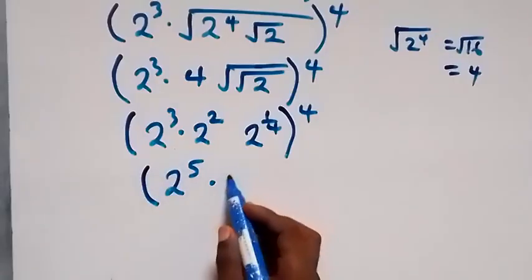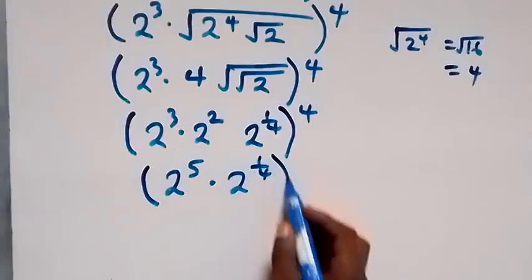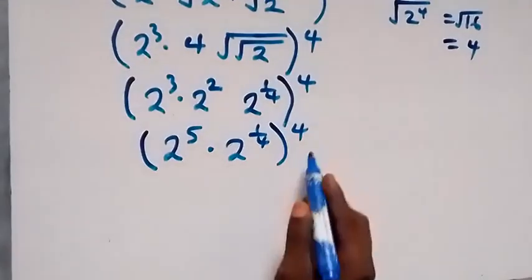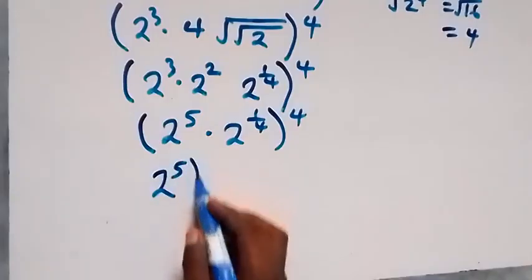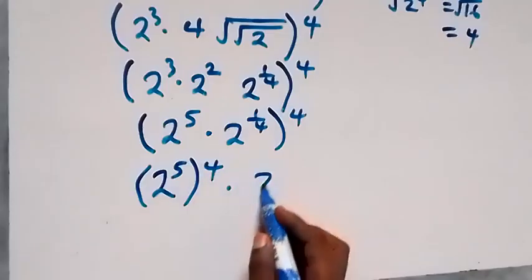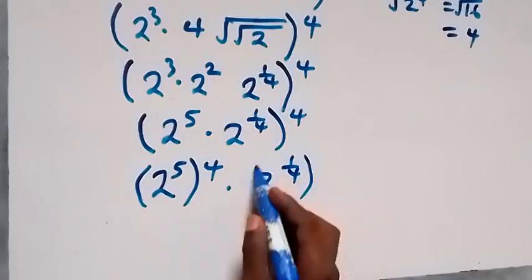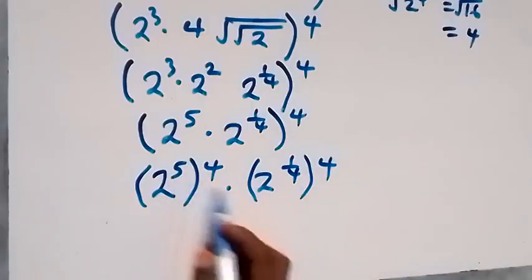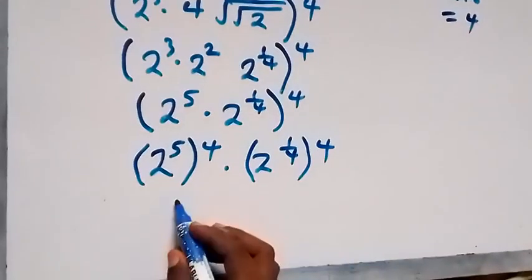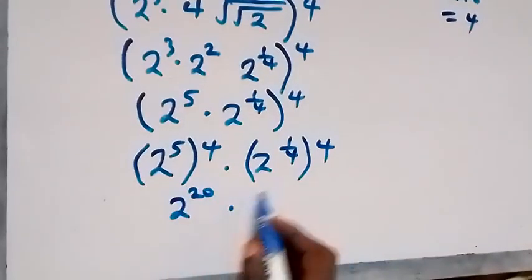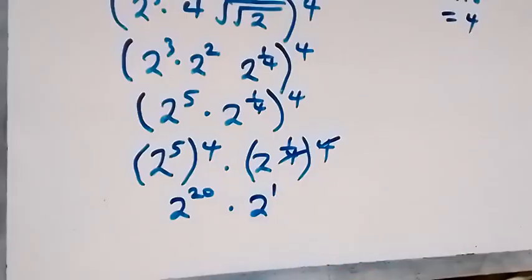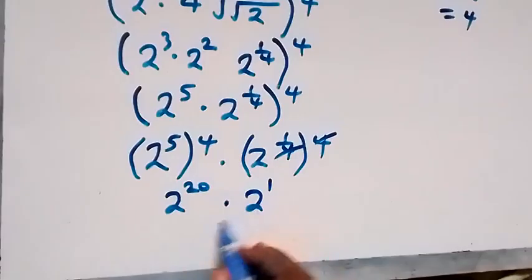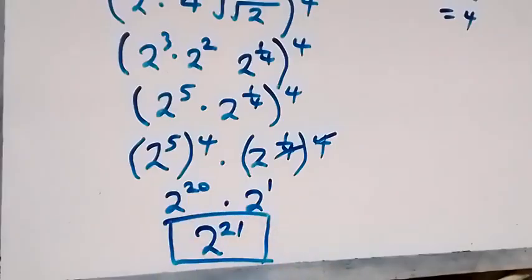Then from here, bringing this together using the law of indices, this is two raised to power five, times two raised to power one over four, then all raised to power four. This power will affect these numbers, so we have two raised to power five times four, times two raised to power one over four times four. That cancels out since they multiply, leaving two raised to power one. From the law of indices we sum the powers, and this gives two raised to power 21.